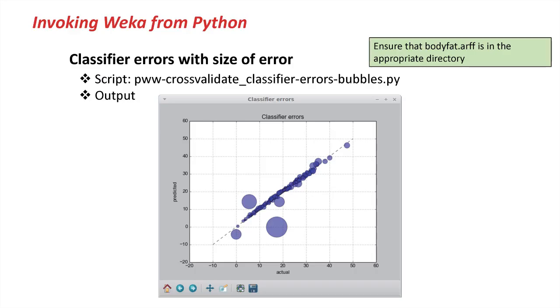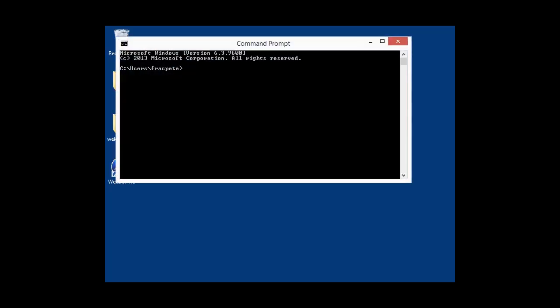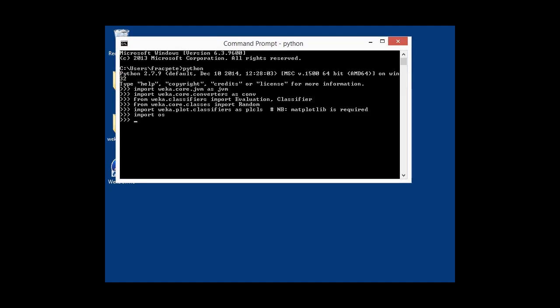For the next script, we'll be plotting the classifier errors obtained from a linear regression classifier on a numeric dataset. And once again, we'll be using the errors between predicted and actual as the size of the bubbles that we're going to plot. Once again, I'm going to fire up the interactive Python interpreter. I'm going to import, as usual, a bunch of modules. In this case, new is the plotting module for classifiers.